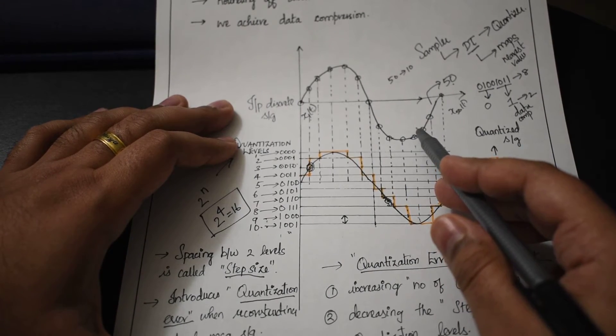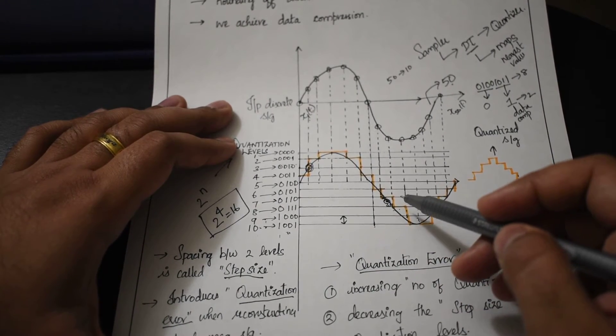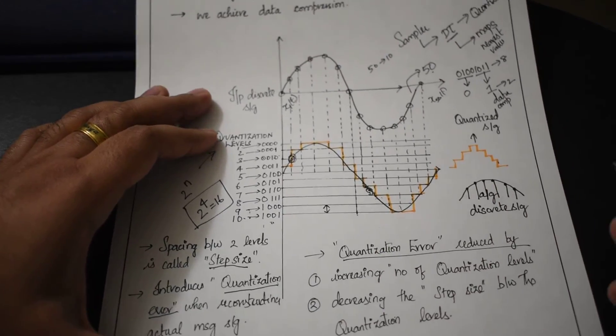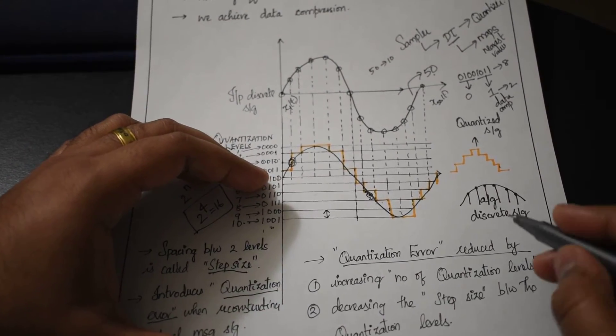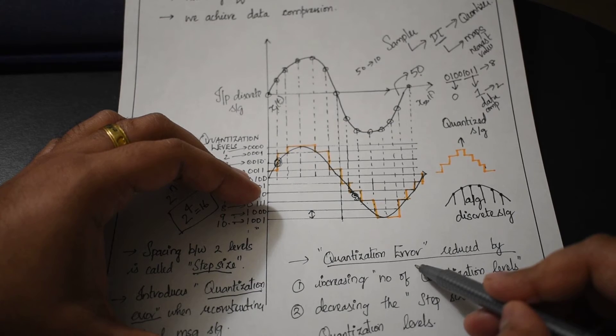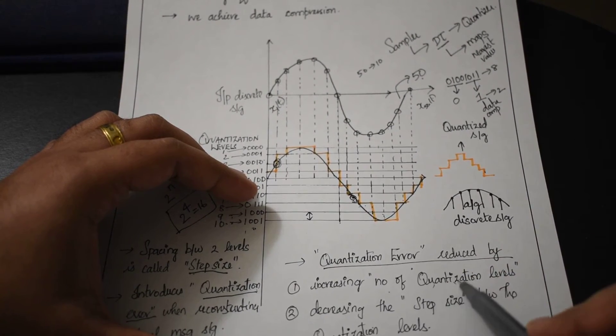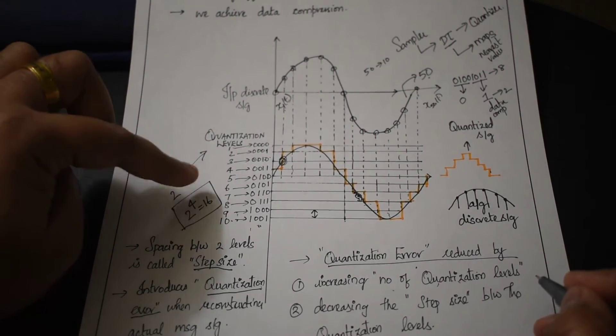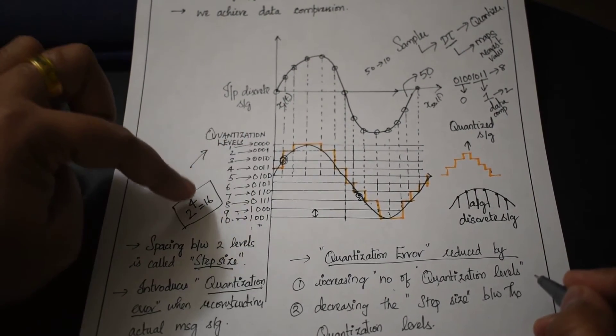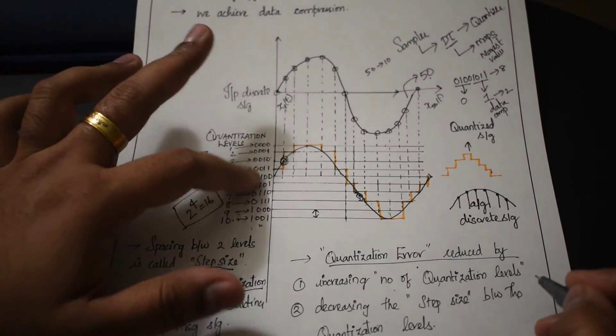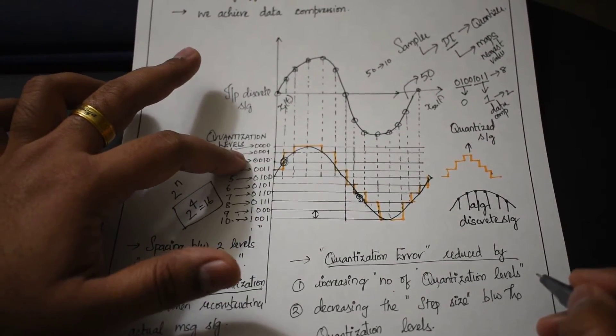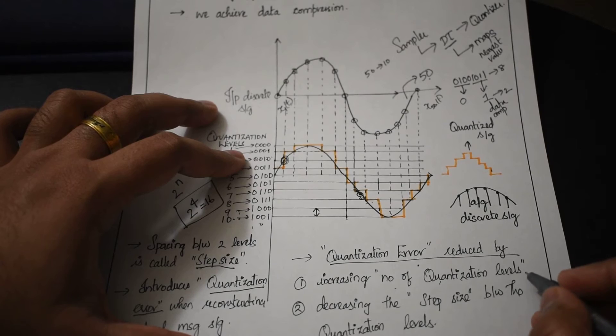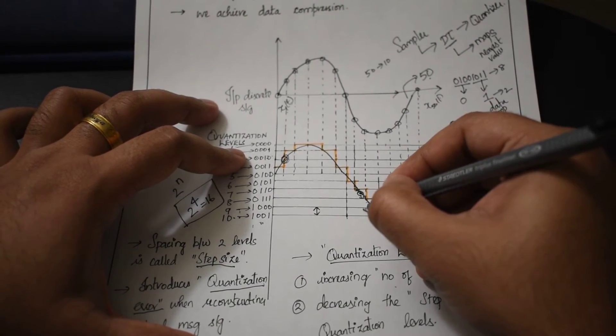There are two ways to reduce quantization error. One is to increase the number of quantization levels. Here we have 2^n, which is 2^4 = 16 quantization levels. If you increase the quantization levels, the step size reduces.